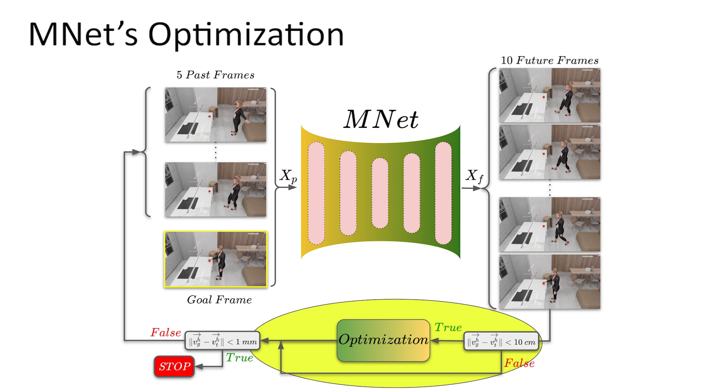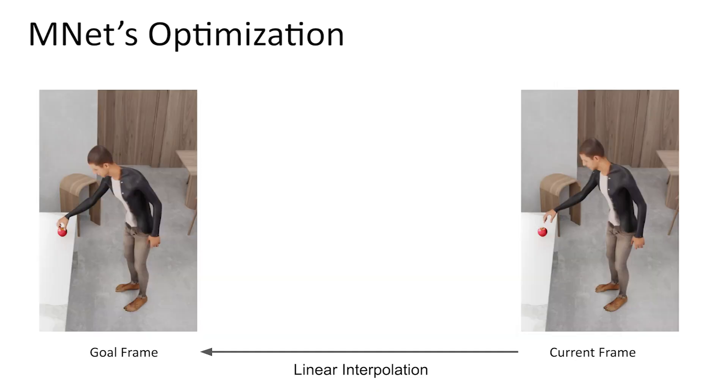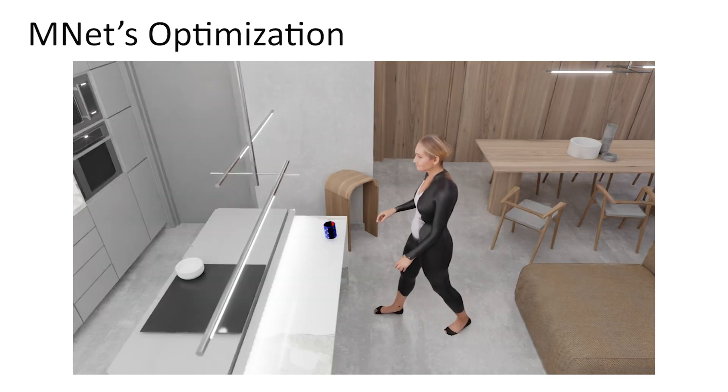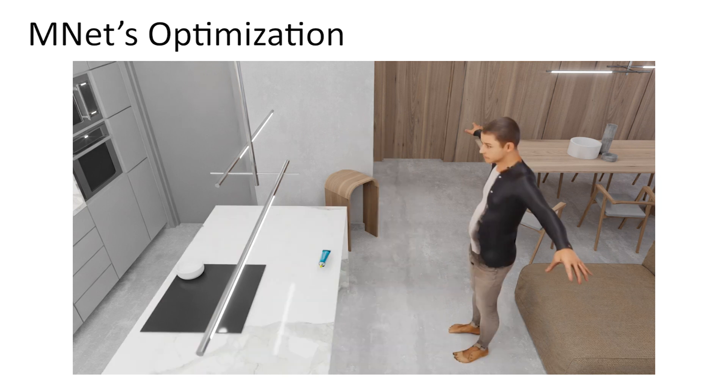Therefore, when MNet's estimated hand is closer than 10 centimeters from the goal hand, we perform an optimization process that moves the hand toward the goal grasp. During this optimization, we linearly interpolate the hand vertices between the current frame and the goal frame. For the rest of the body, we keep MNet's predicted motions intact, as they matter less for contacting the object.